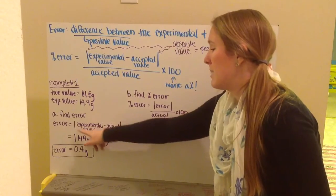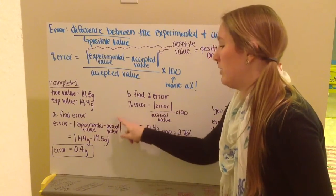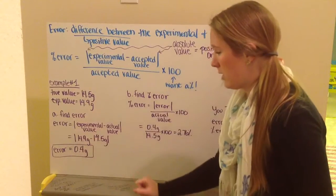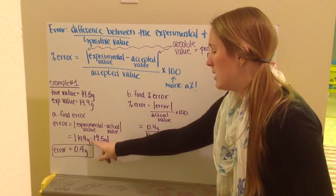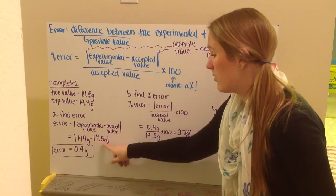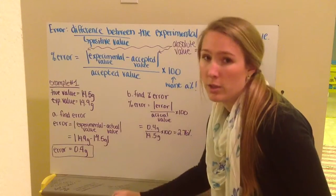To find the error, my error is experimental value minus my actual value, the absolute value of that. I plug in 14.9 grams, subtracting from that 14.5 grams, and I get an error of 0.4 grams.